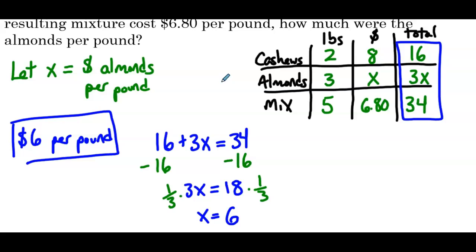And again, if we want to set up an equation directly, 2 times 8 plus 3 times 6 equals 5 times 6.8. Completely correct. And that would simplify to this blue equation. And you don't have to use the table.